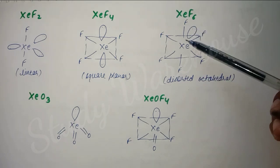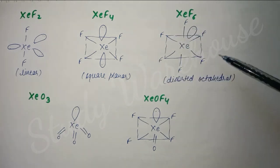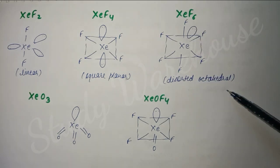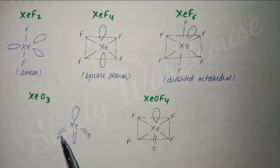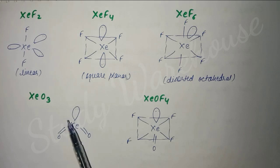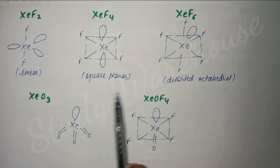One lone pair remains because 2 electrons will remain. We show this lone pair here, and this is octahedral shape. But here one lone pair also came, so we call it distorted octahedral. Next, if we talk about XeO3, here also it will bond with oxygen, sharing 2 electrons each, so 6 electrons are shared. 2 still remain, which means one pair. We show it here like this.